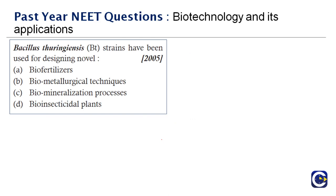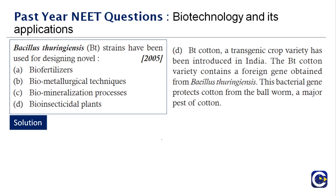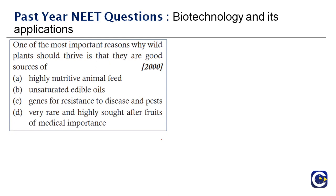Next question: Bacillus thuringiensis BT strains have been used for designing novel — it is obviously not metallurgical, mineralization, or fertilizer. It is to kill the targeted pest, so the right answer is option D — biopesticides. A predominant example is BT cotton, which controls pests that feed on cotton plants, resulting in good cotton yield.